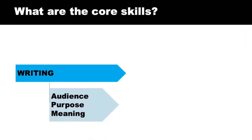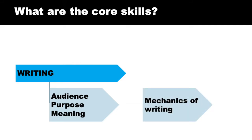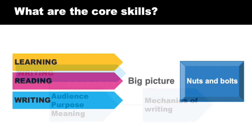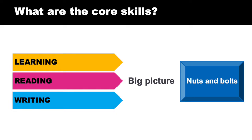Writing has two main strands: the broad area of audience, purpose and meaning making, and then the mechanics of writing, like the vocabulary, the handwriting, the spelling, the punctuation. These first three core skills — learning, reading and writing — approach them in the same way: a big picture focus and then a nuts and bolts focus.